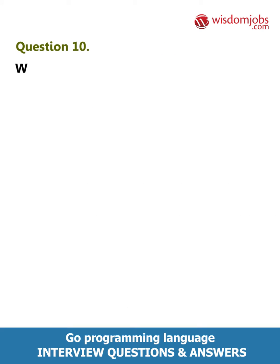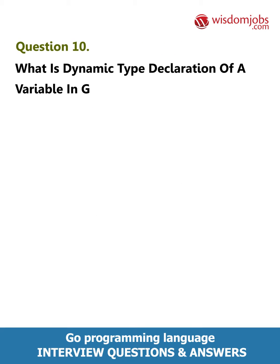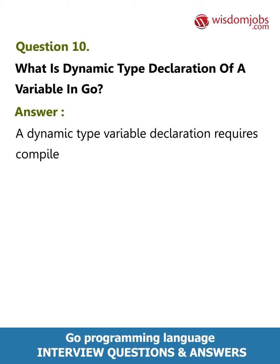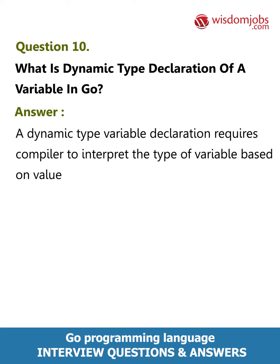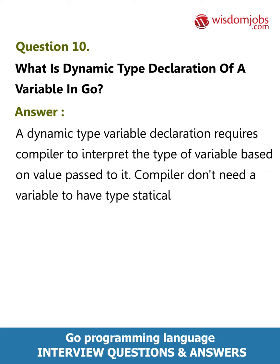Question 10: What is dynamic type declaration of a variable in Go? Answer: A dynamic type variable declaration requires the compiler to interpret the type of variable based on the value passed to it. The compiler doesn't need a variable to have type statically as a necessary requirement.